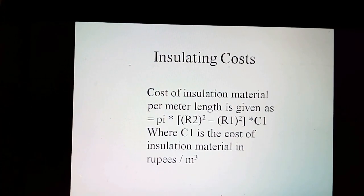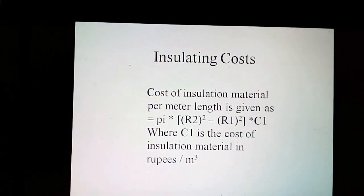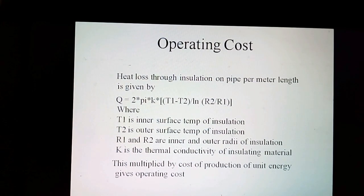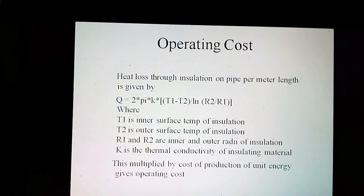Insulation costs: The cost of insulation material per meter length is given as C = 5π × (R2² − R1²) × C1, where C1 is the cost of insulation material in dollars per cubic meter. The cost of heat loss per meter length is equal to 2π × K × (T1 − T2) / ln(R2 / R1), where T1 is the inner surface temperature and T2 is the outer surface temperature of insulation, R1 and R2 are inner and outer radii, and K is the thermal conductivity. This is multiplied by the cost of production of thermal energy in operating costs.